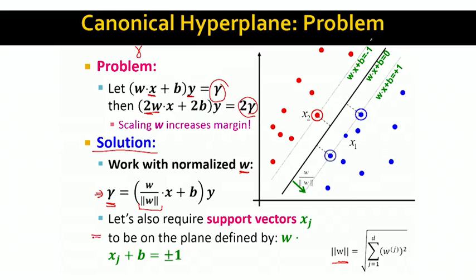So now, this is the first thing we do, the first change is that we will be working with a normalized version of w. And this changes the notion of the margin a bit. The other thing that will also work is that we will require support vectors x, these are these three circled data points, to be defined by the line w times x plus b equals plus or minus 1.